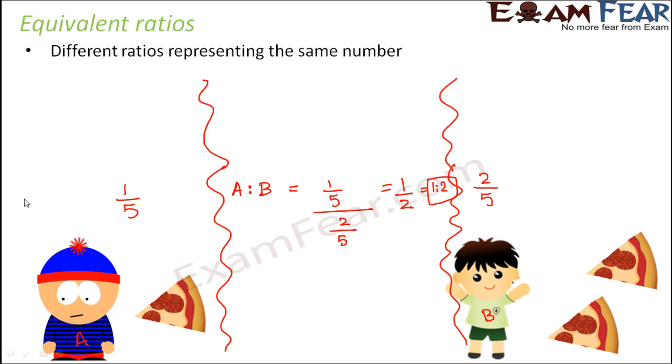Now let us say that on another day, so this was on day 1, this much pizza on day 1. Now let's say on another day, on day number 2, what happened was A ate two slices of pizza out of five slices of pizza.